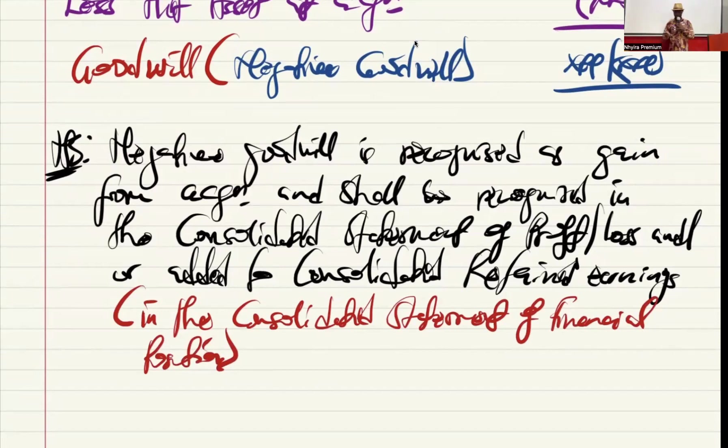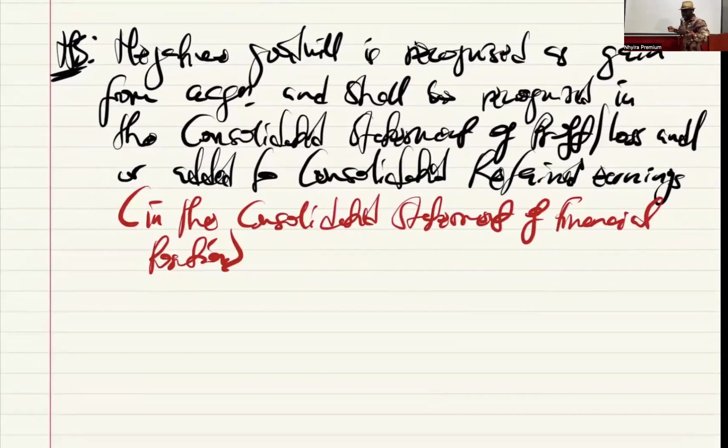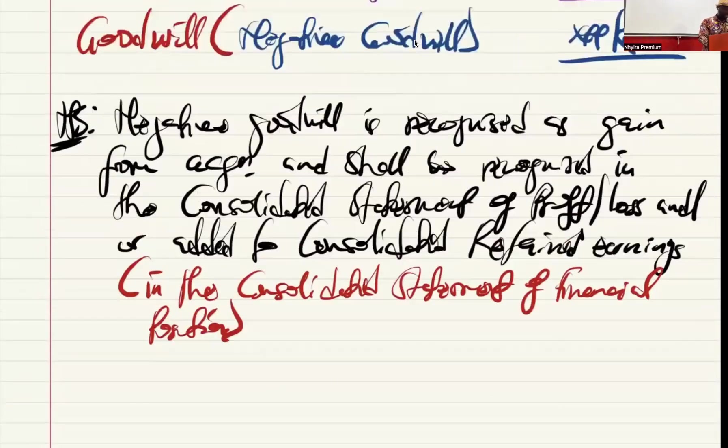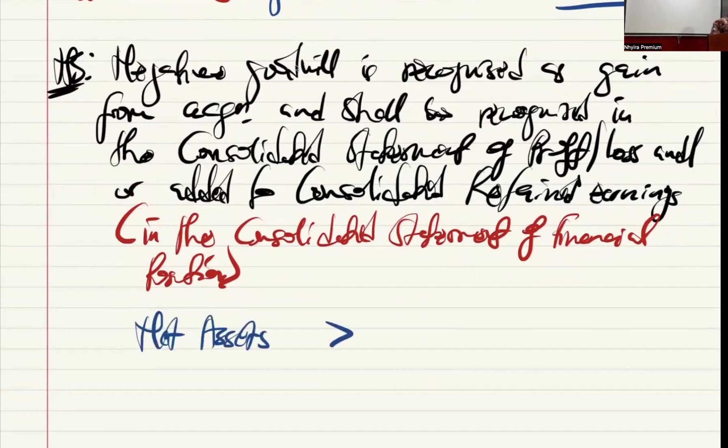What does that mean? It simply means that we paid less than the net assets of the company. So it means that the net assets are greater than the fair value of consideration. That is why we are getting a negative goodwill. So when there is a negative goodwill, it is a gain.